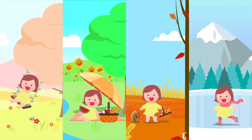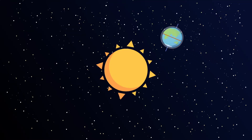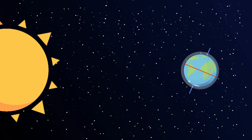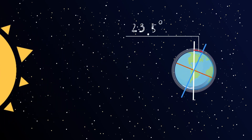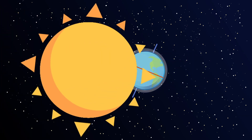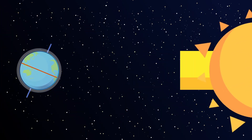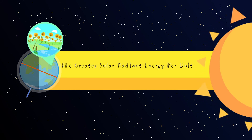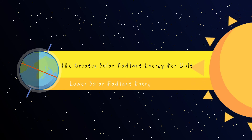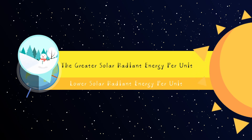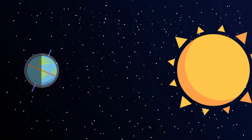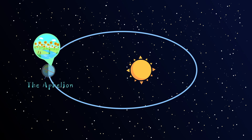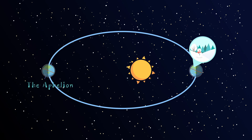Now let's take a look at the changes in season. Seasons change because the Earth revolves around the sun, with a rotation axis tilted at an angle of 23.5 degrees against the orbital plane. As the Earth revolves around the sun, the hemisphere with greater solar radiant energy per unit area experiences summer, while the other hemisphere, with lower solar radiant energy per unit, experiences winter. The northern hemisphere experiences summer when the Earth is located at the aphelion, and winter when the Earth is located at the perihelion.